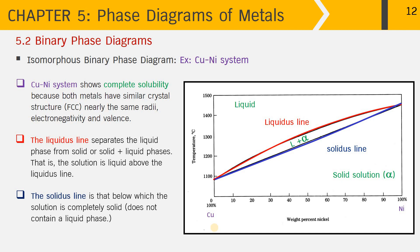There is another important line shown in blue, which is the solidus line. The solidus line is the boundary below which the solution is completely solid — it separates the solid phase from any other phases, whether liquid or a mixture of liquid plus solid solution. For this isomorphous binary phase diagram you can see the liquidus and solidus lines, and since copper and nickel have similar atomic size and crystal structure, they are soluble throughout all compositions in both liquid and solid solution.